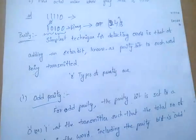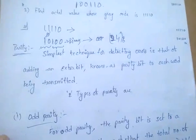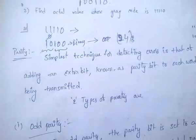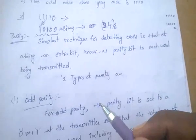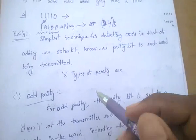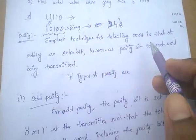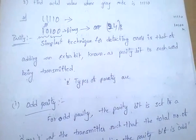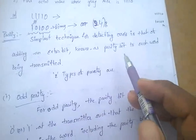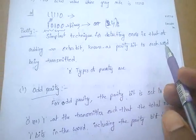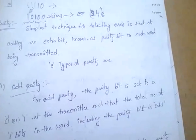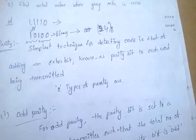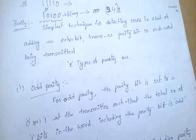Next topic: parity. Parity is nothing but a bit used to detect errors. It is a simple technique for detecting errors by adding an extra bit, known as parity, to each word being transmitted.